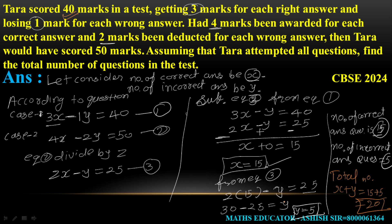वापस एक बार solution समझ लेते हैं। TARA ने exam में 40 marks gain किए। Correct answer के marks 3 मिले, तो 3X, और incorrect का minus Y, is equal to 40 — यह Equation 1। Equation 2: correct question के marks 4 होते और incorrect के 2 marks minus होते, तो 4X - 2Y = 50।